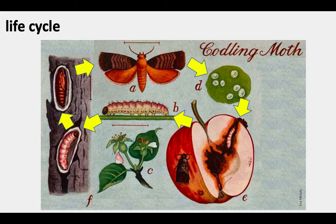Usually that's under a bark scale, where it forms a little chamber. Inside the chamber, it then transforms to the pupal stage. It's a pupa for about two to three weeks. That larval stage had been about three to four weeks. And then the new adult moth emerges from that pupa, and the cycle starts again.